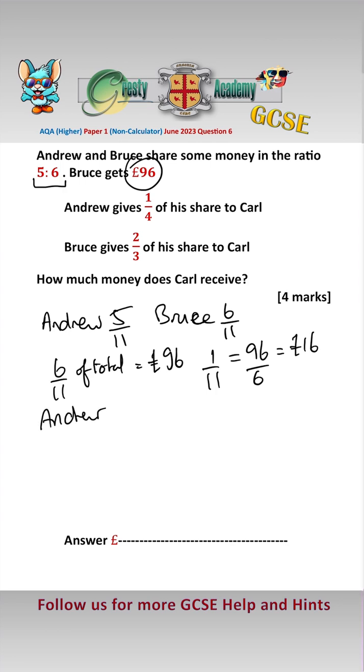Therefore, we know that Andrew, who got 5 elevenths, gets 16 times 5, which is £80.